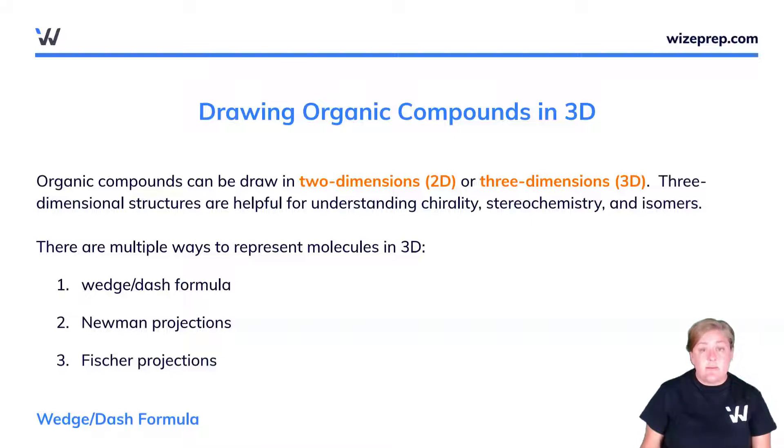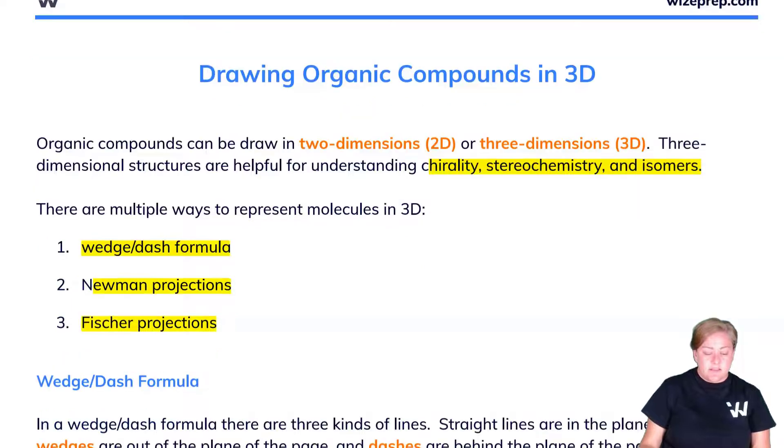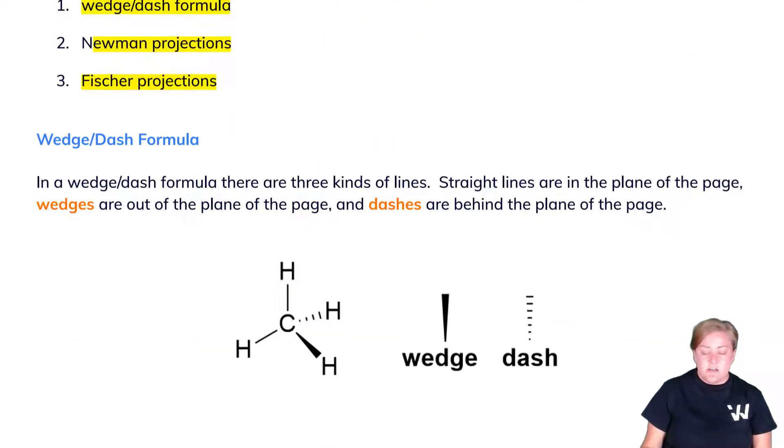Organic compounds can be drawn in two and three dimensions, but three-dimensional architecture is useful for understanding chirality, stereochemistry, and isomers—key concepts later on in this course and your university courses. There are multiple ways to represent molecules in three dimensions: the wedge-dash formula, Newman projections, and Fischer projections.